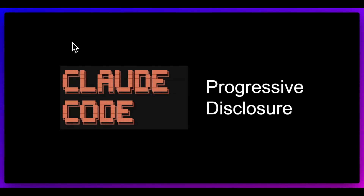In this video, I'm going to be going over progressive disclosure within CloudCode. One of the interesting trends I've noticed over the past several months is a lot of AI infrastructure companies — from Cloudflare, Anthropic, Vercel, Cursor — from products to model companies across the board, are all arriving at the same conclusion independently. And that's in and around how to build AI agents.